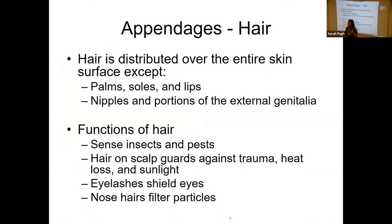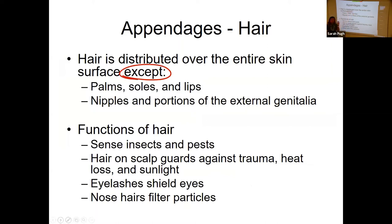Other than our oil glands, we have a couple of other appendages — accessories to our skin — like hair. We have hair pretty much all over the surface of our bodies, except there's none on your palms, soles of your feet, lips, nipples, or portions of the external genitalia. Everywhere else is fair game — our face, arms, legs. Hair does a lot of things. You do have some nerve endings that wrap around hair follicles so that when your hair moves, these nerve endings are triggered and tell your brain the hair is moving.